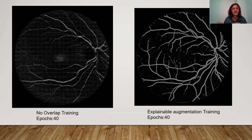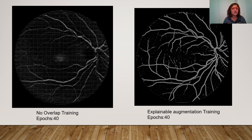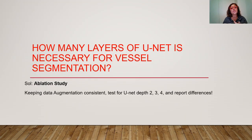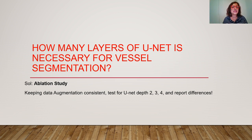Without the explainable augmentation, using no overlap and training M2 with only 40 epochs, you can clearly see mosaic-like structures in the segmentation output — which is not a good result. However, with the explainable augmentation demonstrated here, at just 40 epochs you get a much better resolution in the segmentation — no more patchy artifacts — and it looks significantly better. For next week, we will look at how many layers of U-Net are necessary for vessel segmentation — an ablation study examining U-Net depths of two, three, and four. Stay tuned.